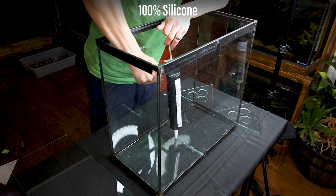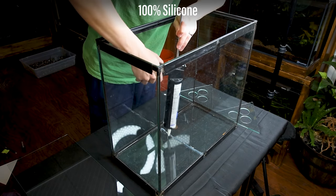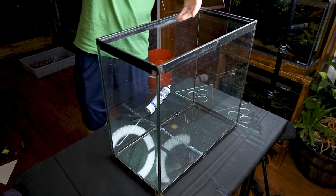Now I can bring it all together. First, I put a line of silicone in the bottom of the tank. I pressed the divider into this.